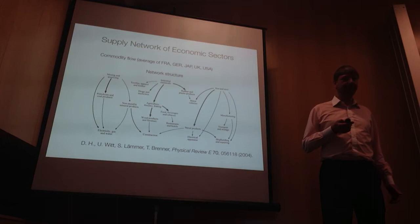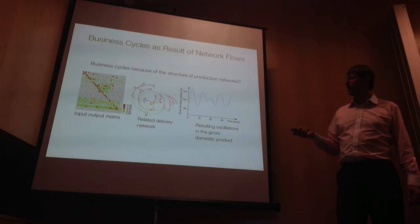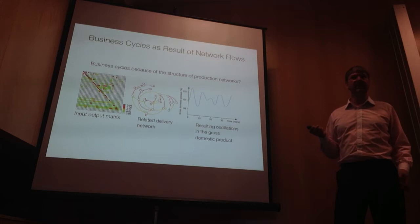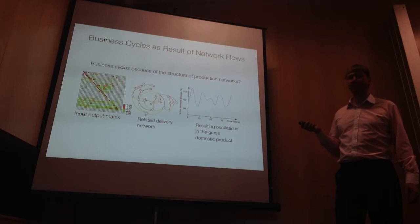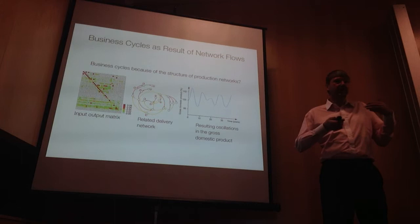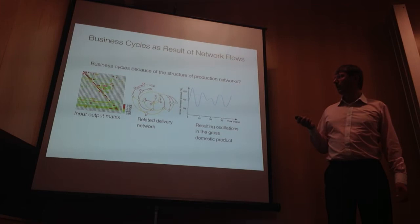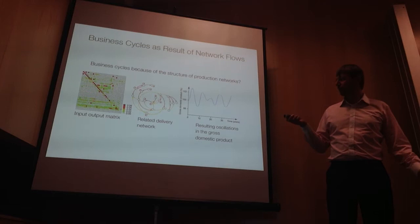We put this matrix into our dynamical equations, and we find oscillatory behavior. But those oscillations are not periodic, as we find in reality — there are no periodic booms and recessions, something that has puzzled economists for a long time. People have always said there was a technological shock driving the system out of periodic oscillations. But now we can understand this non-periodicity through the network structure of the supply network.